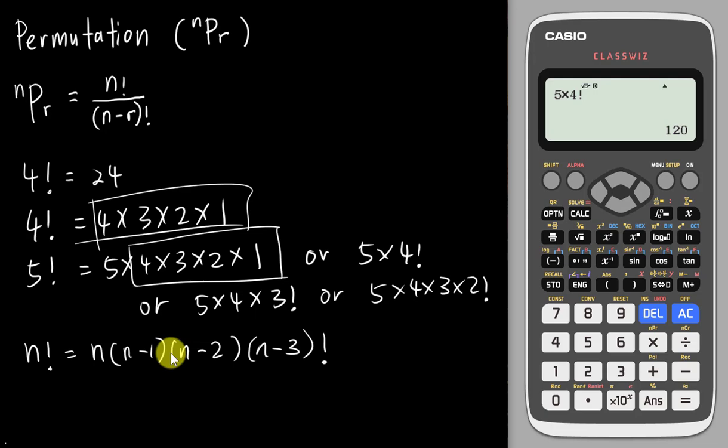This concept is very important when expanding n factorial. When you expand n factorial, you start with n, then n−1, then n−2, then n−3, and so on. If you want to stop at any point, you just add a factorial to that term. Once you understand this concept, we can move into NPR.